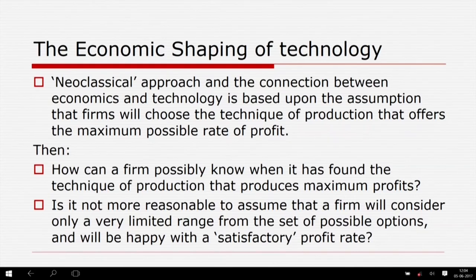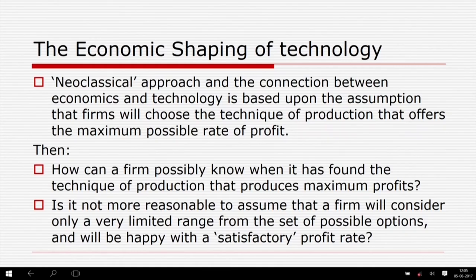For example, how can a firm possibly know it has found the technique of production that produces maximum profits? Is it not more reasonable to assume that a firm will consider only a very limited range from the set of possible options and will be happy with a satisfactory profit rate — not necessarily maximum, just satisfactory?